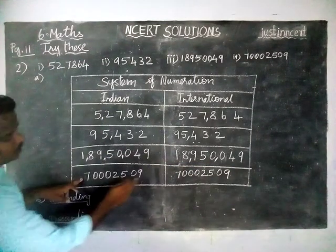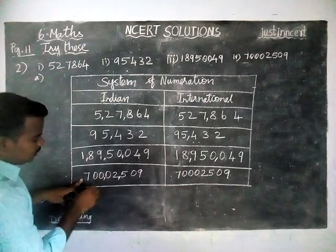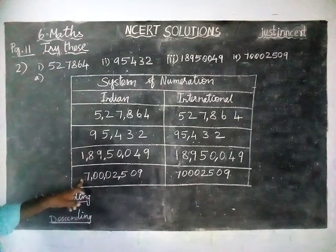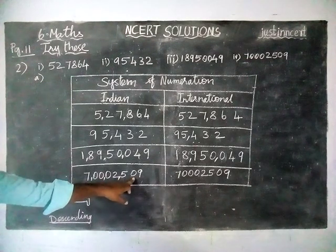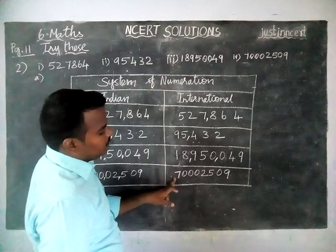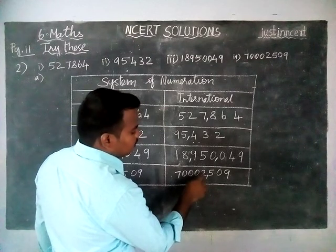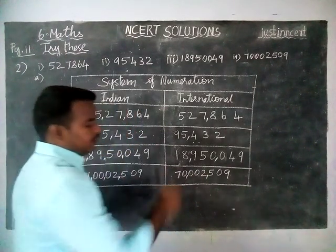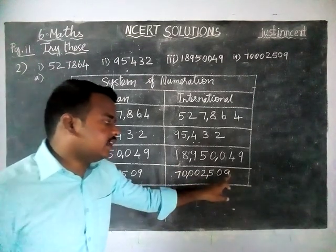Next, last number. Ones, tens, hundreds — 1000, 10,000 — lakh, 10 lakh — crore. Seven crore, 2,509. In the same case, in the international system of numeration: ones, tens, hundreds — comma — then up to crore place. So 70,002,509.